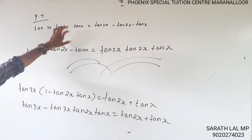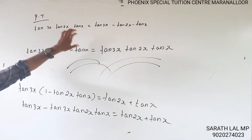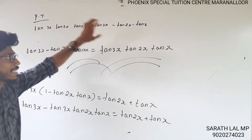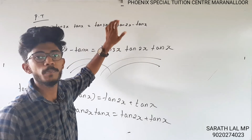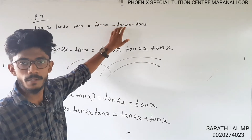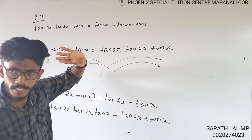So this becomes tan3x = tan(2x + x). Rearranging gives us tan3x - tan2x - tanx = tan3x · tan2x · tanx, which is what we needed to prove.